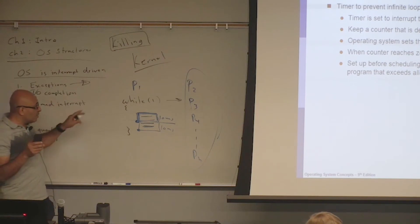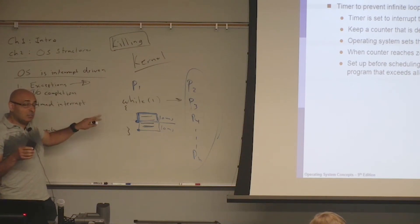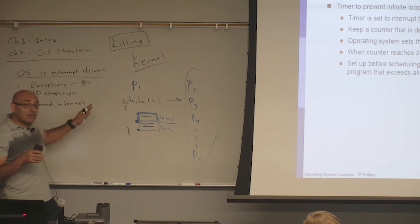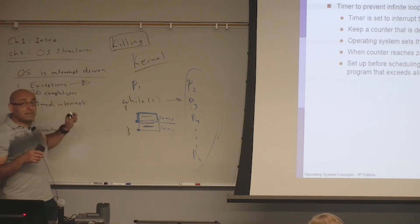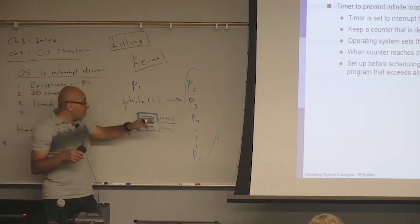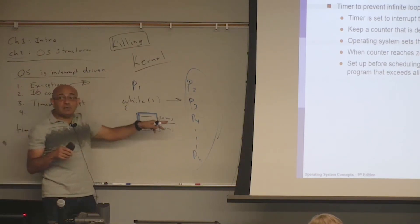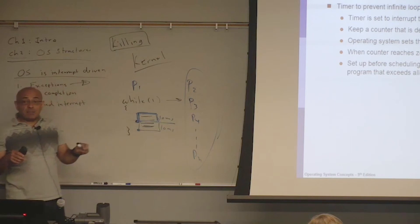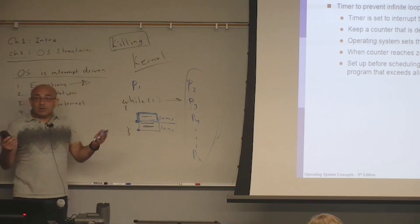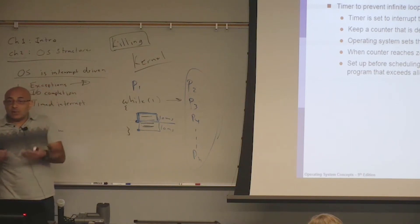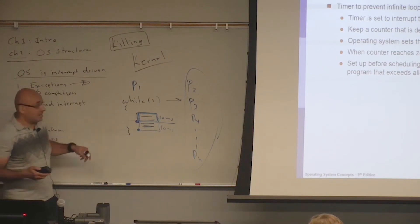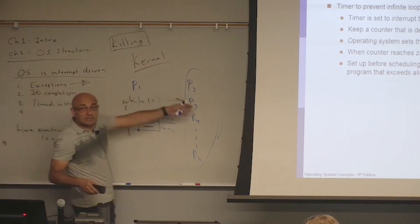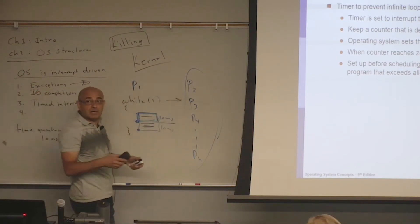To summarize: the operating system does not detect an infinite loop and does not terminate it. But what the timed interrupt does is prevent an infinite loop from slowing or killing the whole system — other processes will be making progress as well.